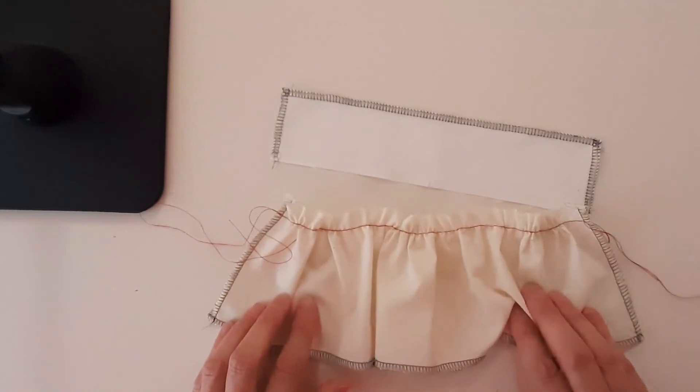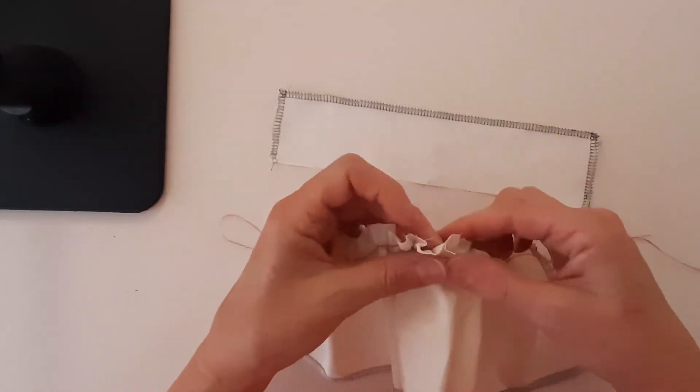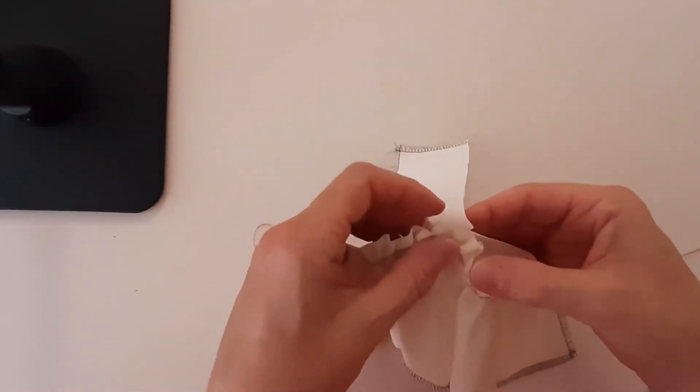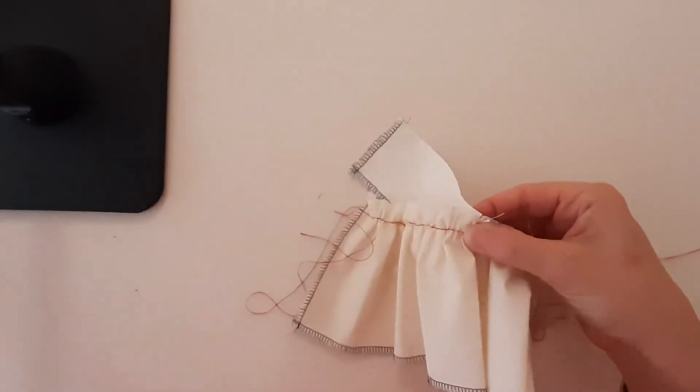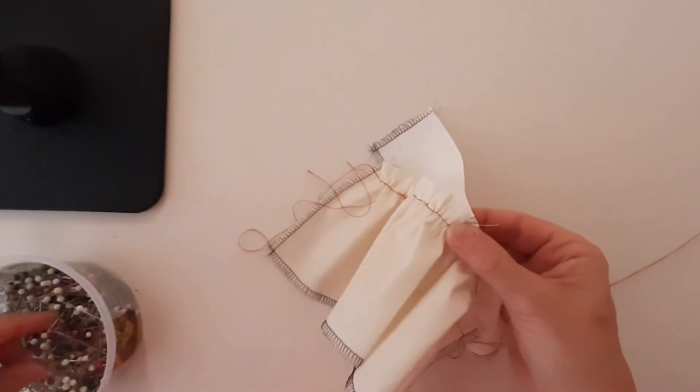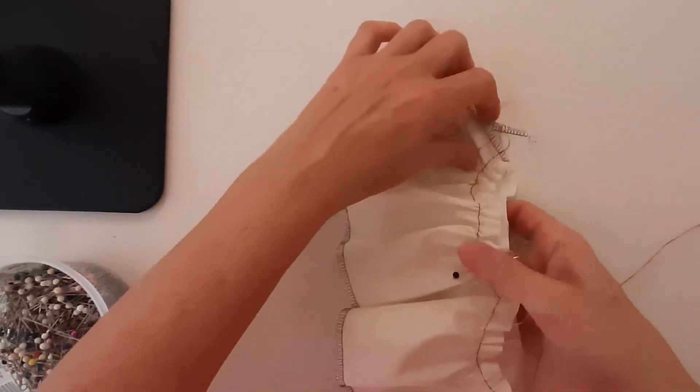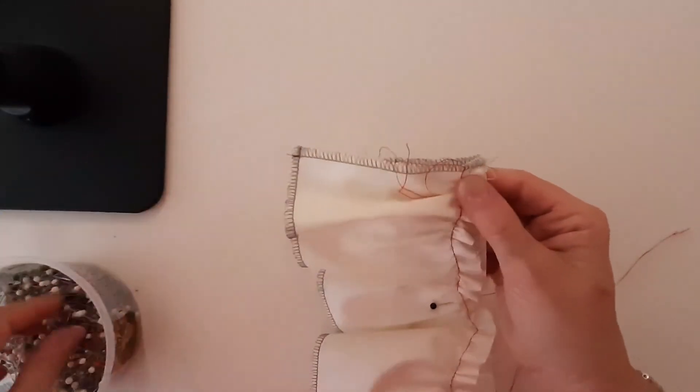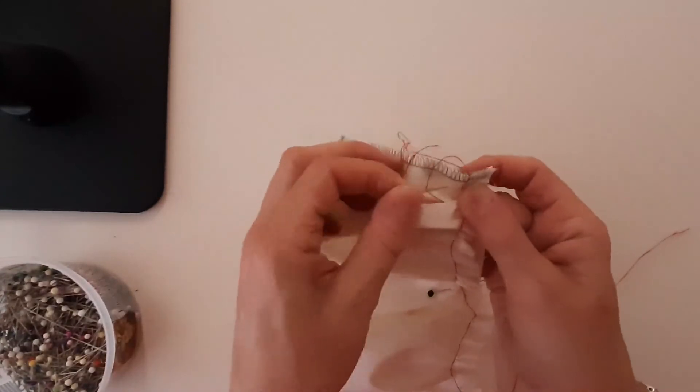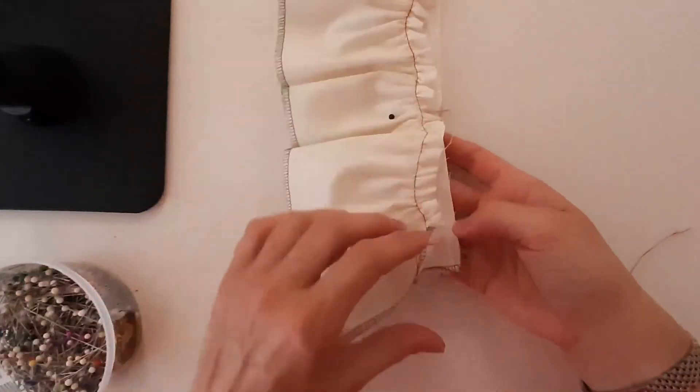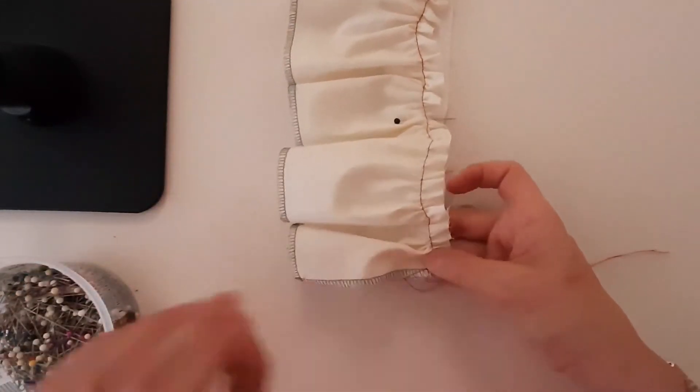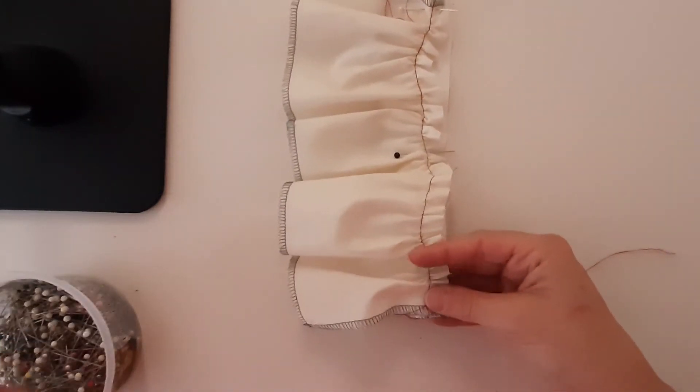That looks pretty good to me. So now I'm going to find my notch and I'm going to match it to my foundation piece. And I'm going to pin across. I'm going to pin at the beginning of my seam and I'm going to pin at the end of my seam. And I'm going to fit everything else in between and pin it down.